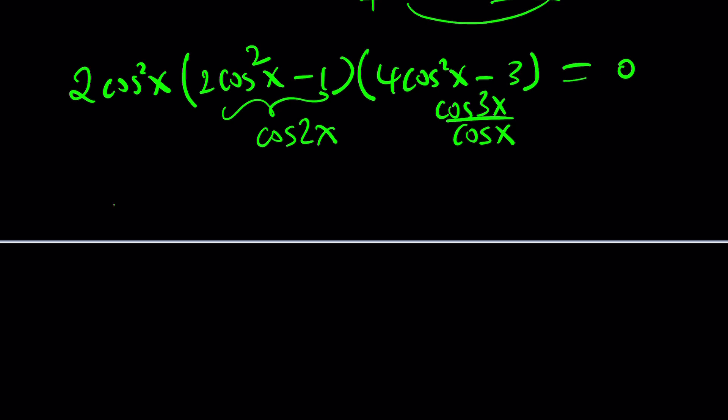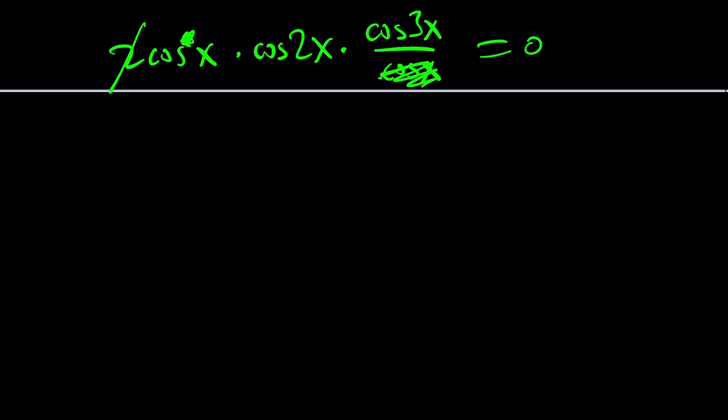From here we get the following: 2 cosine squared of x times cosine of 2x times cosine of 3x divided by cosine of x. Remember I told you cosine x divides cosine 3x. That's why we get this expression. One of these will cancel out. And since it equals 0, we can also divide by 2 or just forget about 2. Now this gives us something amazing: cosine of x times cosine of 2x times cosine of 3x equals 0. Beautiful.